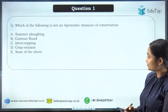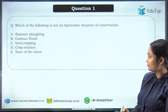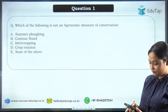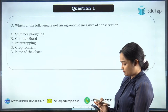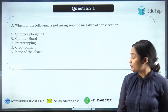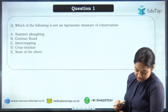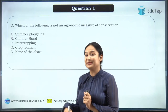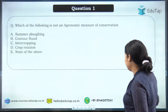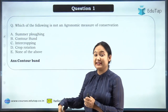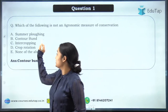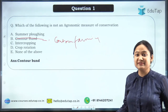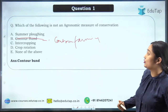The correct answer here is contour bund — but wait, actually the correct answer is contour farming. Don't get confused between contour bund and contour farming. I added the contour bund option intentionally, but the difference between the agronomical measure and the engineering measure is that contour bund is an engineering measure, while contour farming is the agronomical one. I'll explain the difference as we move forward.